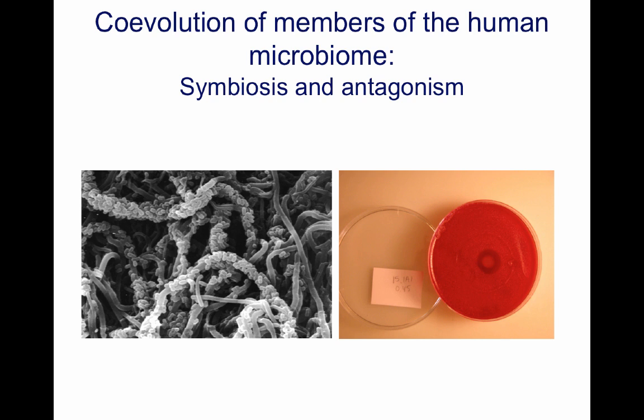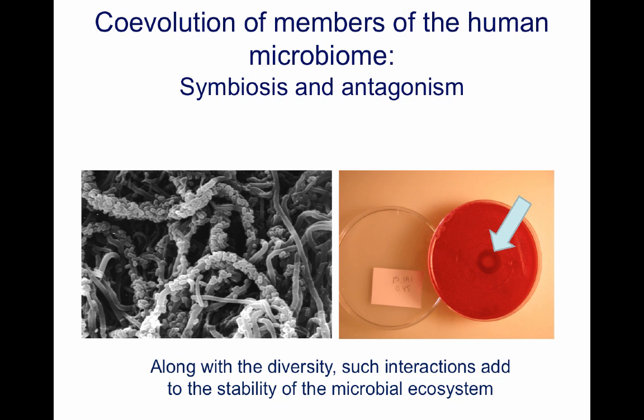To the right, you see the opposite — two examples that have antagonistic properties. In the middle, you will see a bacterium from the skin which secretes a compound that inhibits another bacterium, which is also a predominant member of the skin microbiota. So you find examples of symbiosis as well as antagonism within our human microbiome, and this is important because, along with the diversity of our microbiome — which consists of more than a thousand different bacterial species — these interactions add to the stability of the microbial ecosystem on our surfaces.